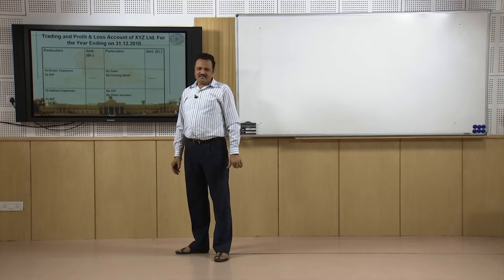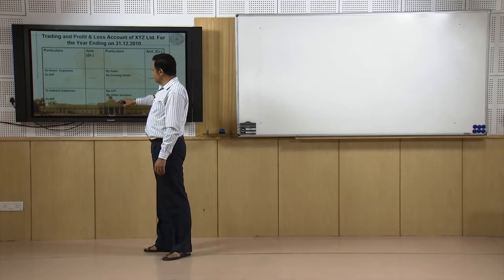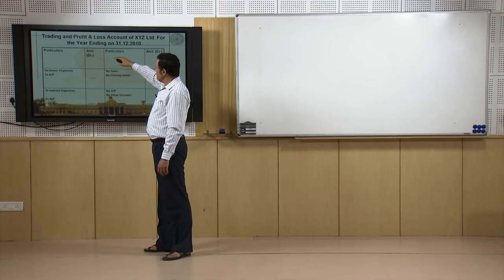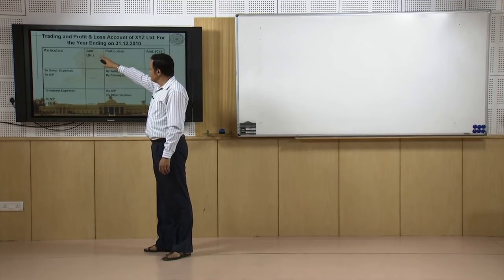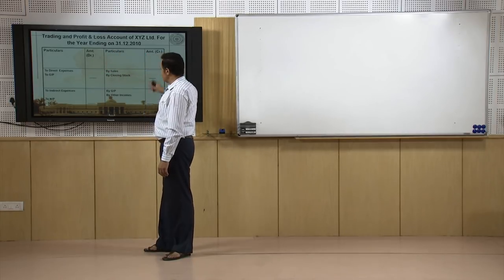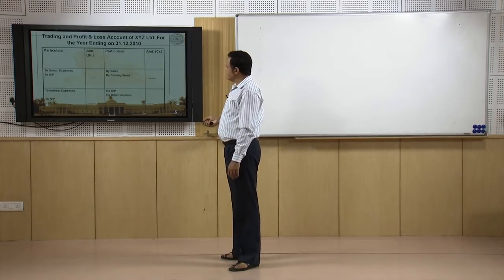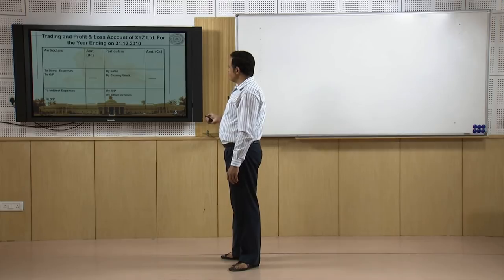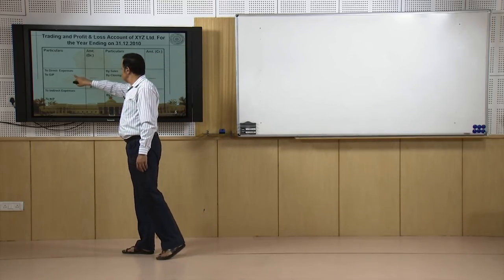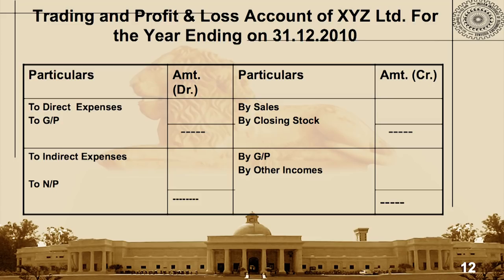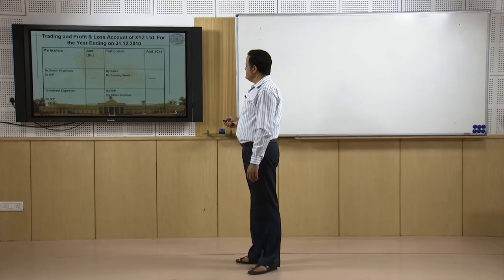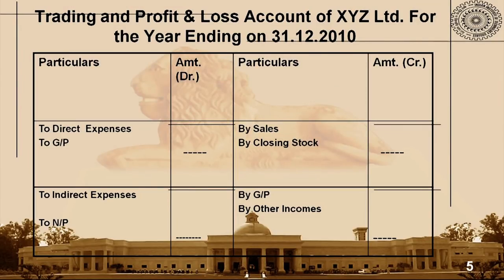This statement has two parts. It has a debit column and a credit column. The debit side contains direct expenses, and the credit side contains two items: sales and closing stock. On the debit side — the expense side — we put all direct expenses, and on the credit side we put all incomes. There are only two direct incomes to the business: income from sales and income which will come from the closing stock which we have not yet sold in the market.